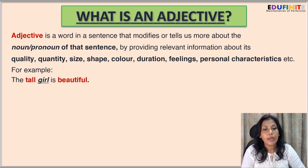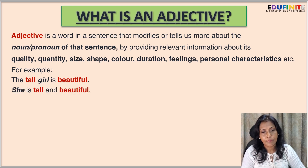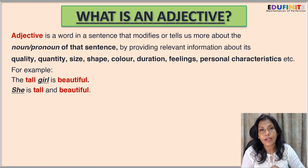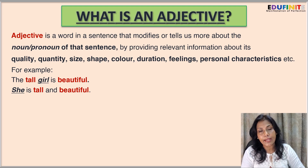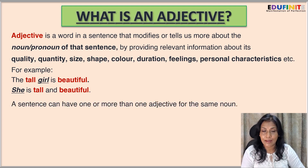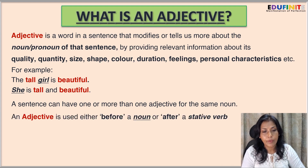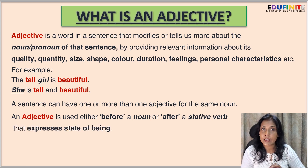For example: 'The tall girl is beautiful,' or with a pronoun, 'She is tall and beautiful.' Here, 'tall' describes or modifies the noun 'girl,' and 'beautiful' also modifies the noun 'girl.' In the second sentence, both 'tall' and 'beautiful' are two adjectives modifying the pronoun 'she.' So we see that a sentence can have one or more than one adjective for the same noun. An adjective can be used either before a noun or after a stative verb that expresses state of being.